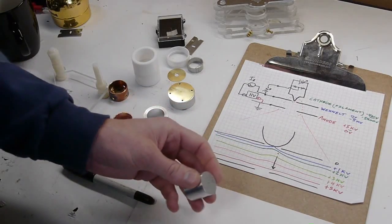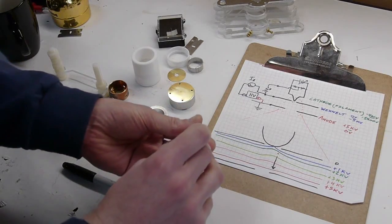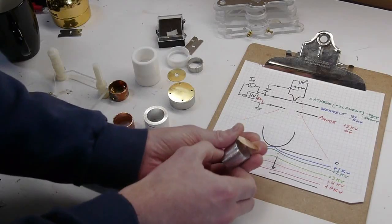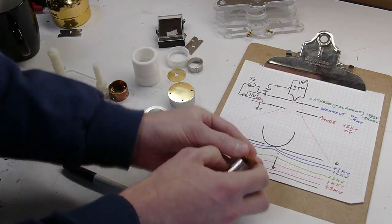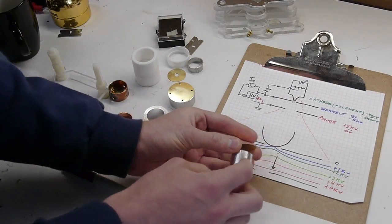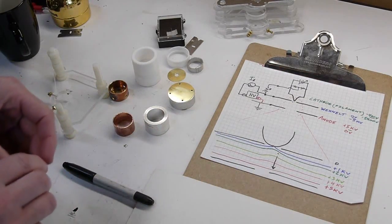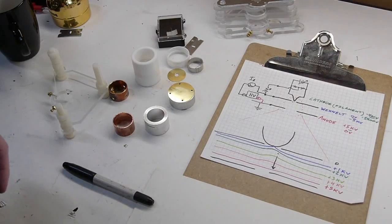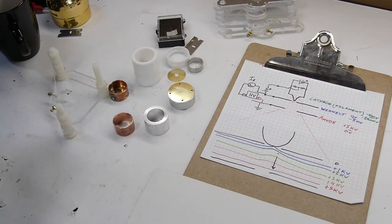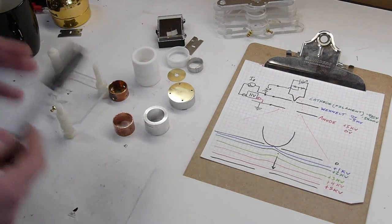So for example, if this is the anode, inside this metal cup there's no electric field because it's all the same potential. But above this cup, if this plate is set up like this and this plate is at negative 5 kV and this is at zero, there's a very high field and that's what actually causes the electrons to move.